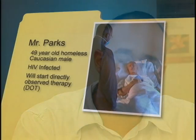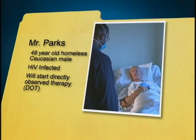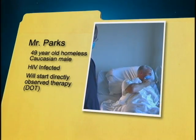Mr. Parks is a 49-year-old homeless male born in the U.S. His case was identified January 20th. He's sputum smear positive, culture positive, and pan-sensitive. The chest x-ray was positive and non-cavitary. He's also HIV positive. I've been coordinating treatment between the TB team and the HIV physician. He was put on rifabutin, INH, PZA, and ethambutol on January 21st.